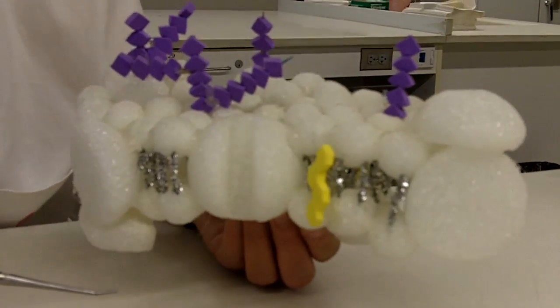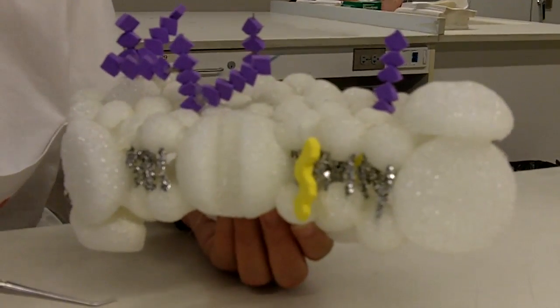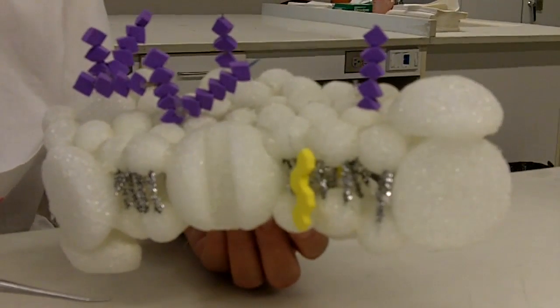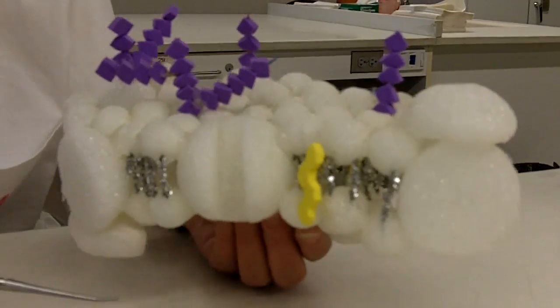This is a model of the plasma membrane. The current model is called the fluid-mosaic model. Fluid because things are moving around, and mosaic because there's a variety of things in the membrane.